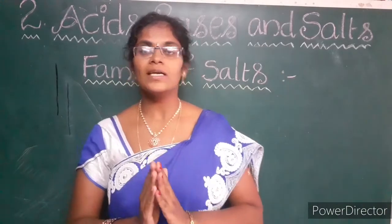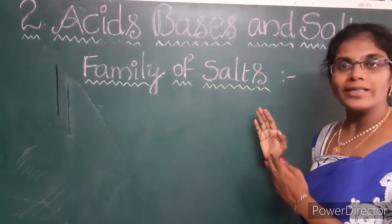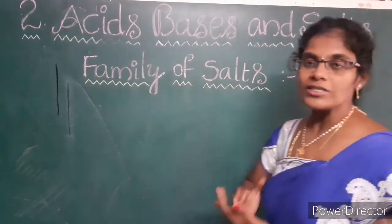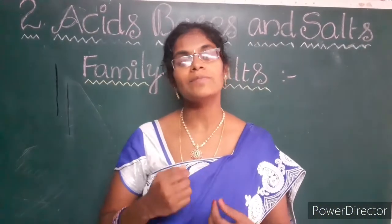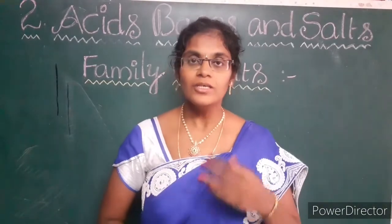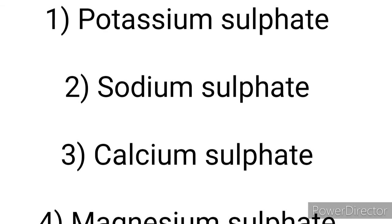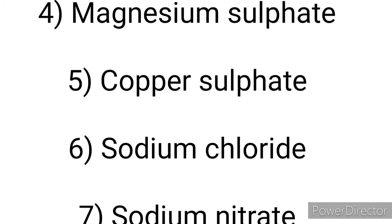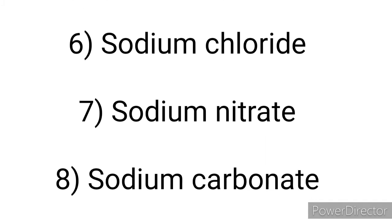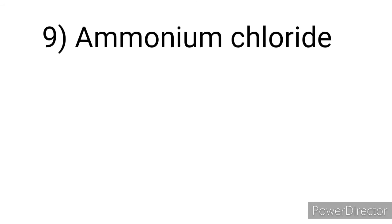Children, first let us know about the family of salts. For knowing the family of salts, first you have to write down the chemical formula of some salts. They are: potassium sulphate, sodium sulphate, calcium sulphate, magnesium sulphate, copper sulphate, sodium chloride, sodium nitrate, sodium carbonate and ammonium chloride.